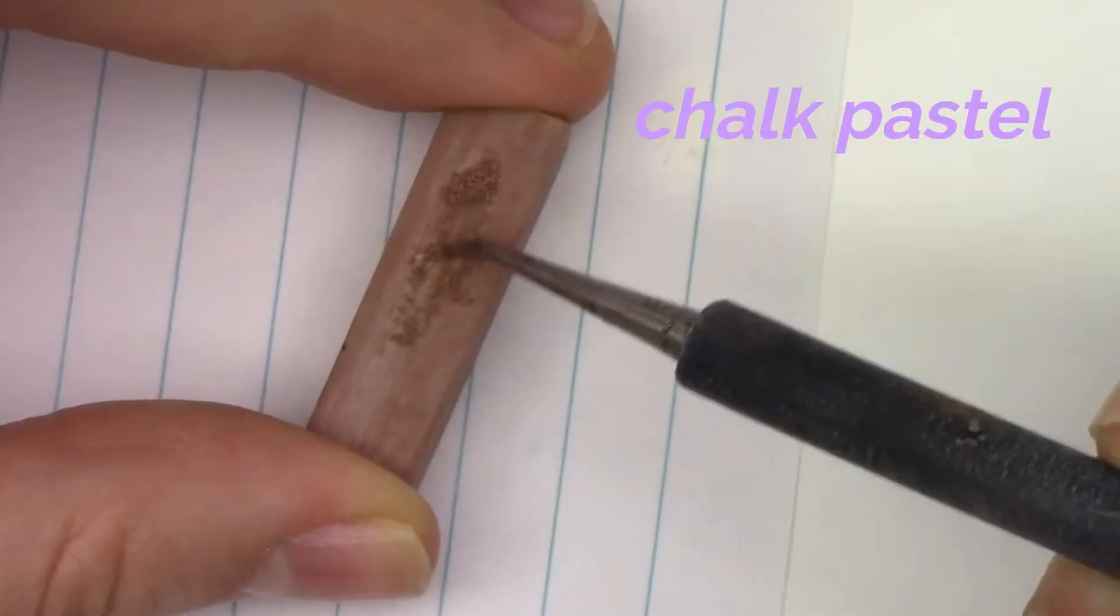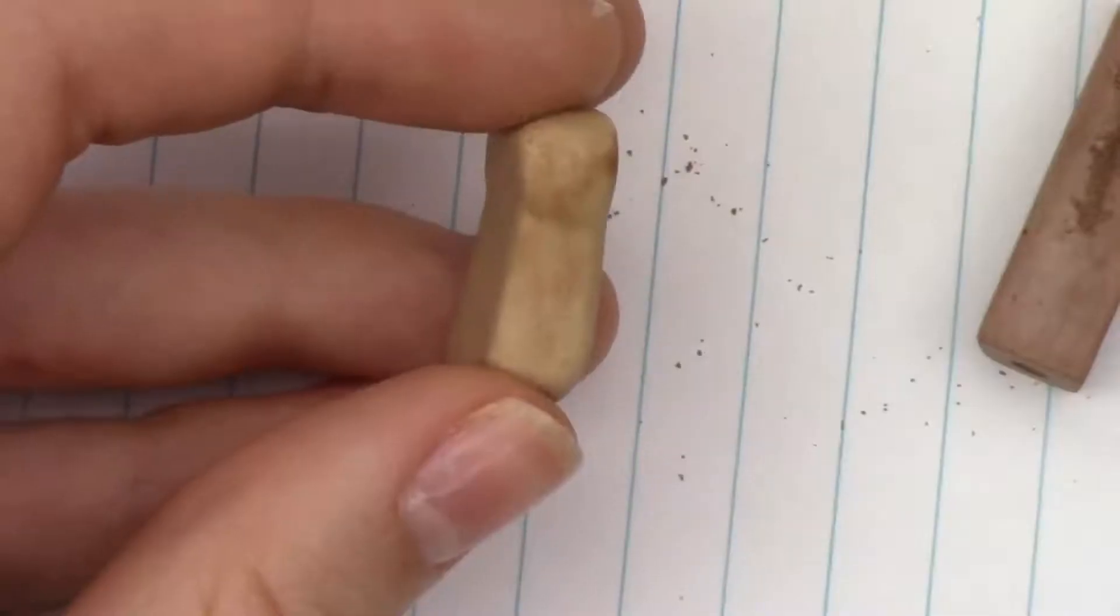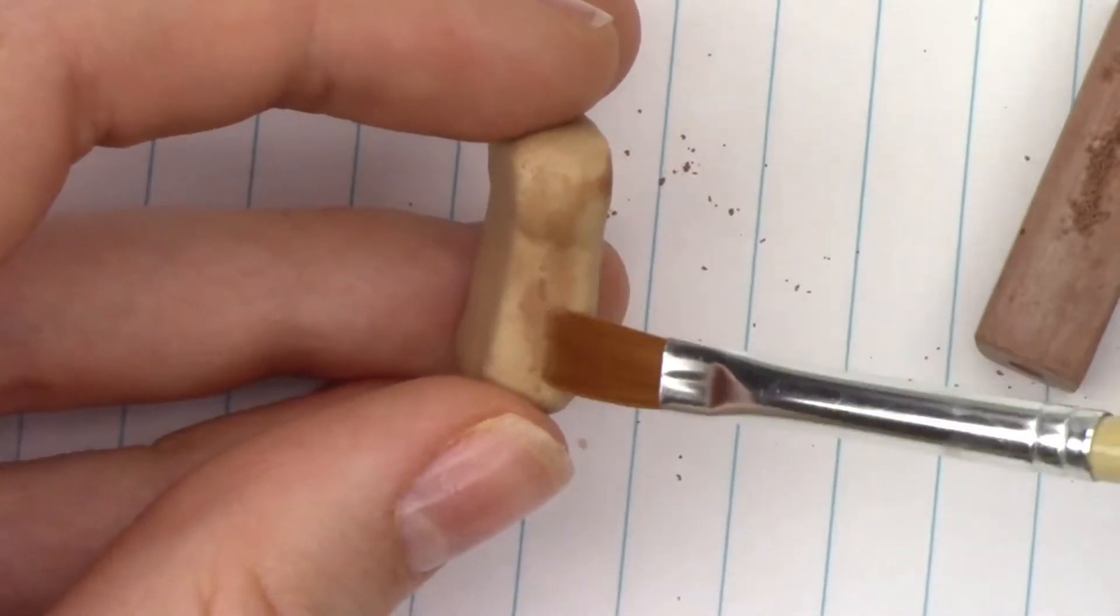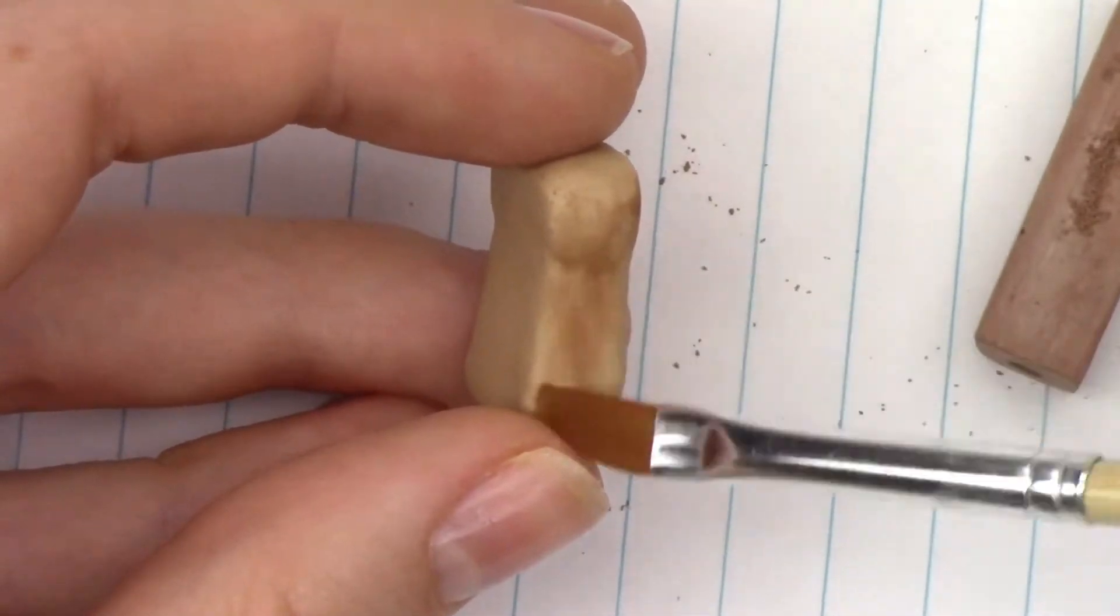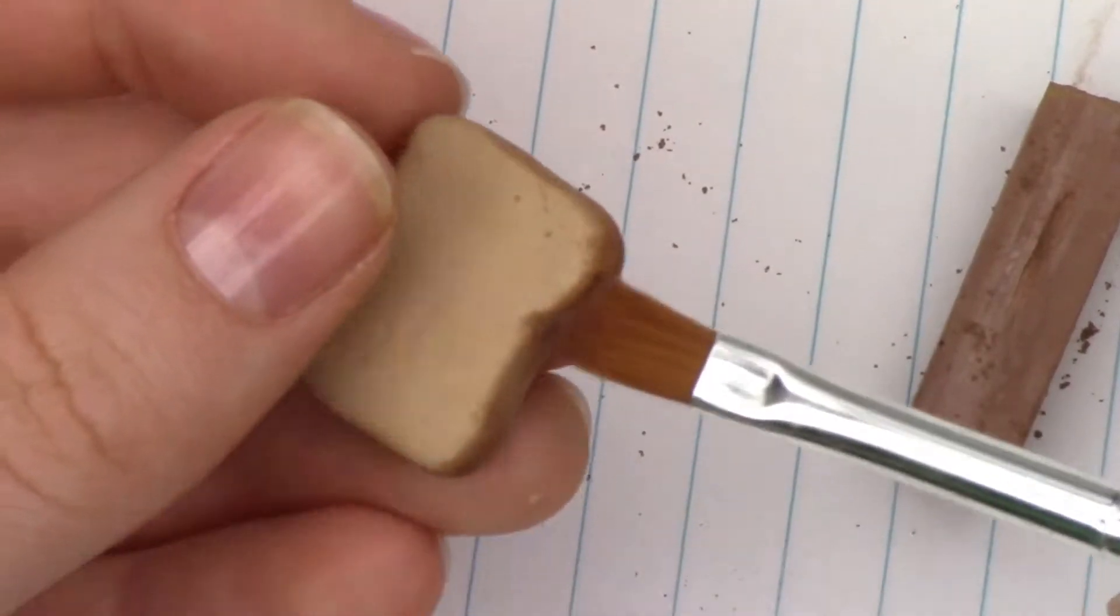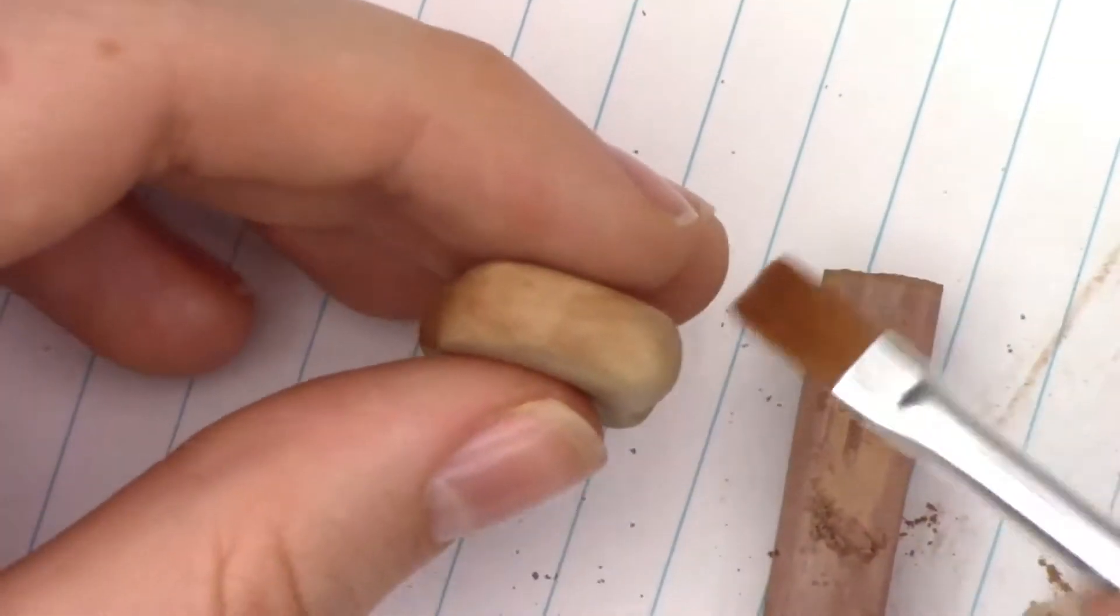Now I'm taking some chalk pastel and brushing it onto the edges of my clay piece of bread. This will give the bread some detail and make the edges look toasted.